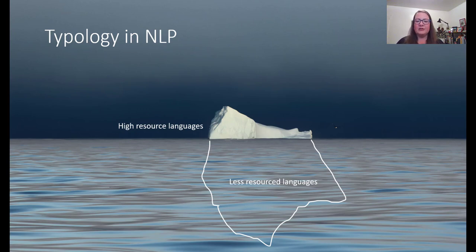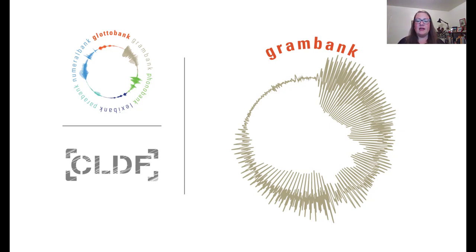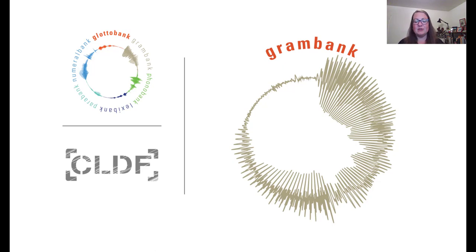Typological information is potentially useful for natural language processing, including things like transfer learning and multilingual models. We're pleased to talk today about Graham Bank, a resource that is designed to improve the coverage of comparative morphosyntactic information across the world's languages. Graham Bank represents typological information in ways that aim to be user-friendly for a variety of purposes, including, importantly, computational linguistic purposes.